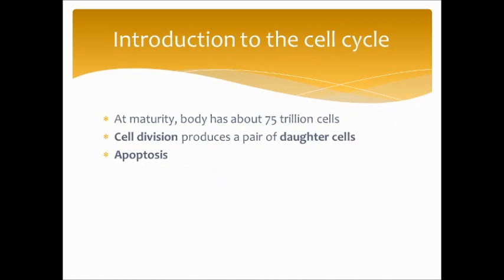At maturity, your body has about 75 trillion cells — an absolutely insane number. It must maintain a relative amount of those cells via cell division. Skin cells and stomach cells replace themselves all the time, so cell division is constantly going on. Cell division produces a pair of daughter cells that are genetically identical to the dividing cells. If a cell is damaged, it will undergo apoptosis, or programmed cell death — cells know when they are damaged and no longer performing their function, and get rid of themselves through apoptosis.